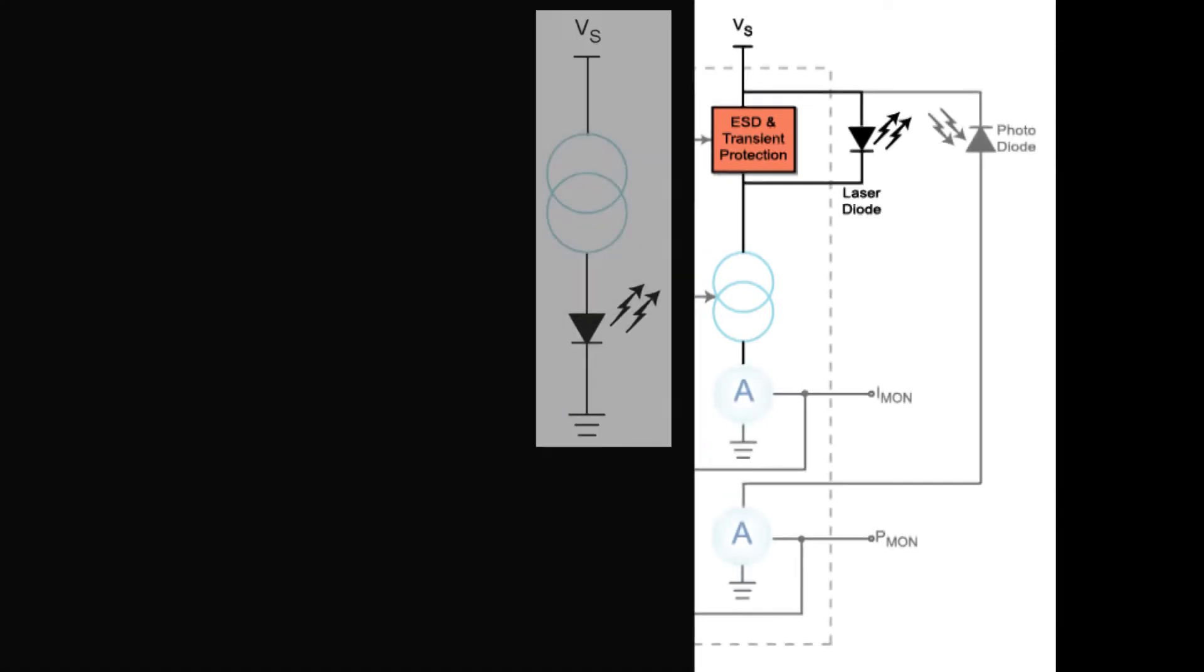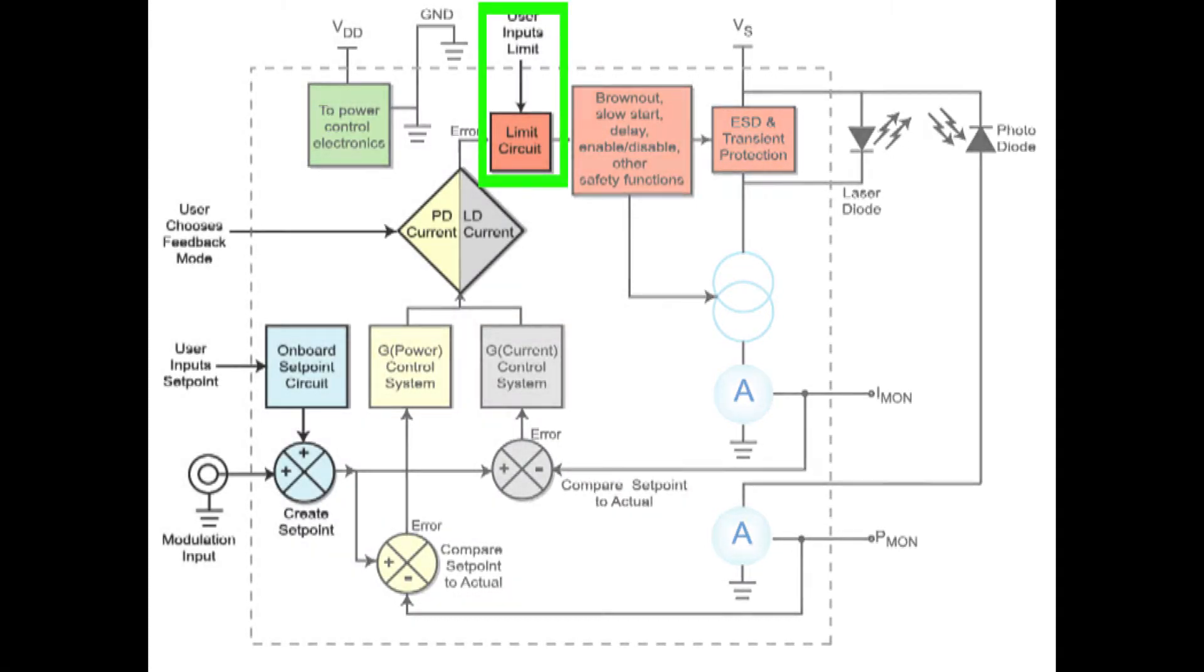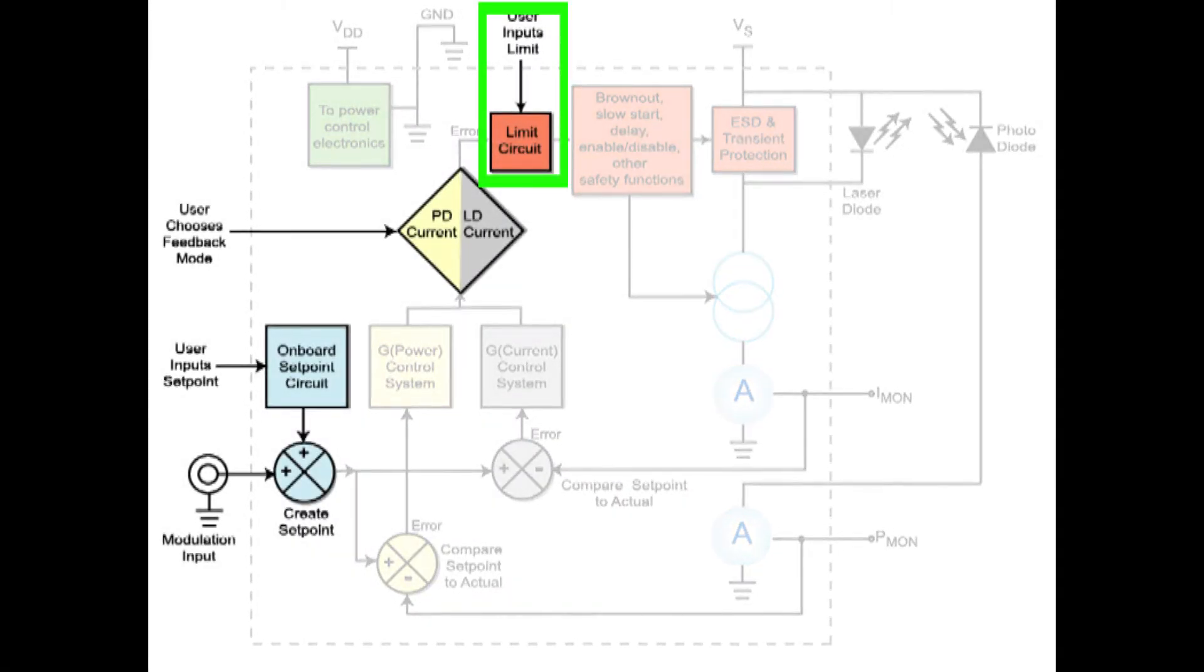User inputs to the control system include the limit setpoint, or maximum laser diode current allowed, the operating setpoint, and whether the control variable is laser diode current or photodiode current.